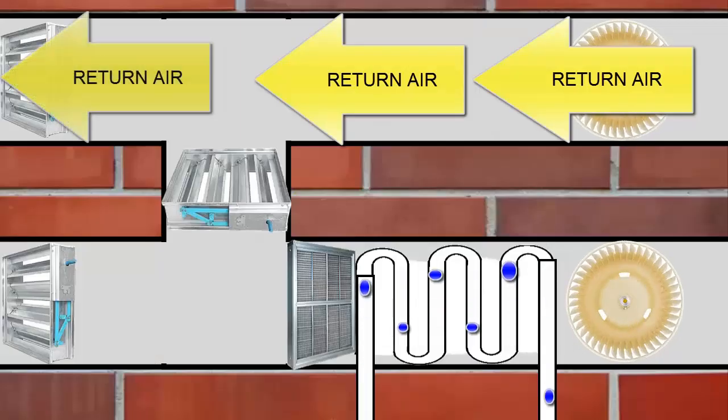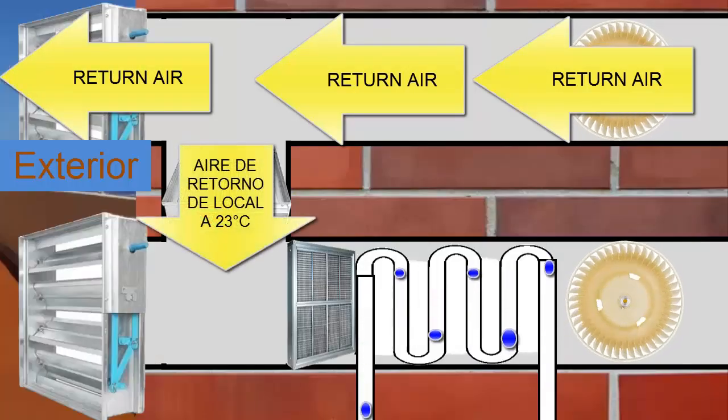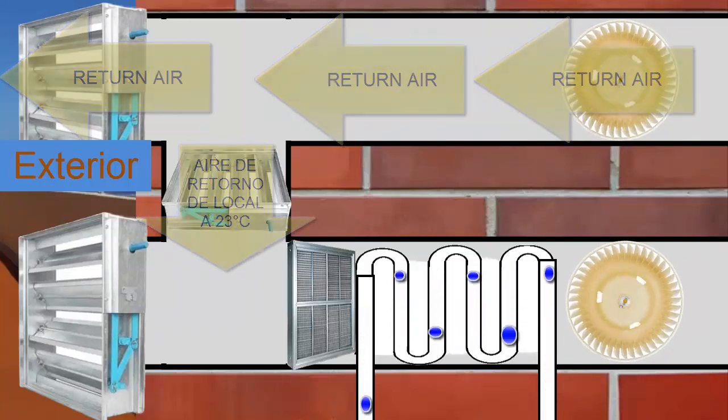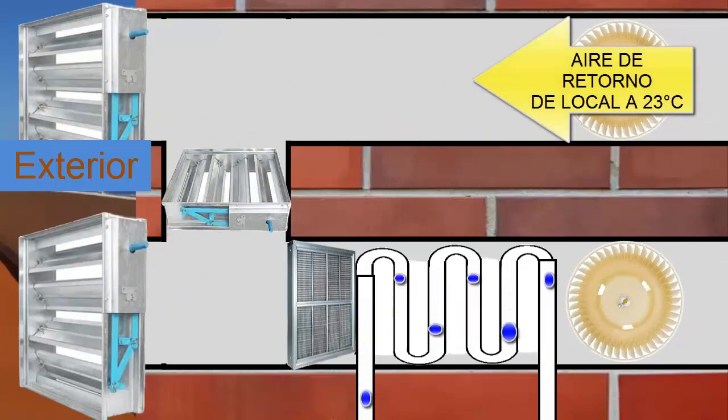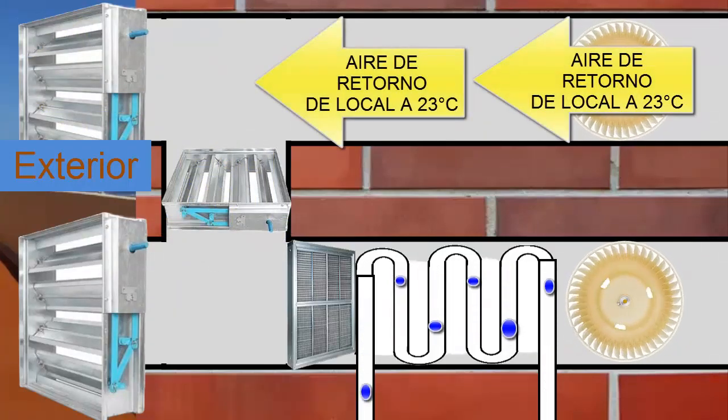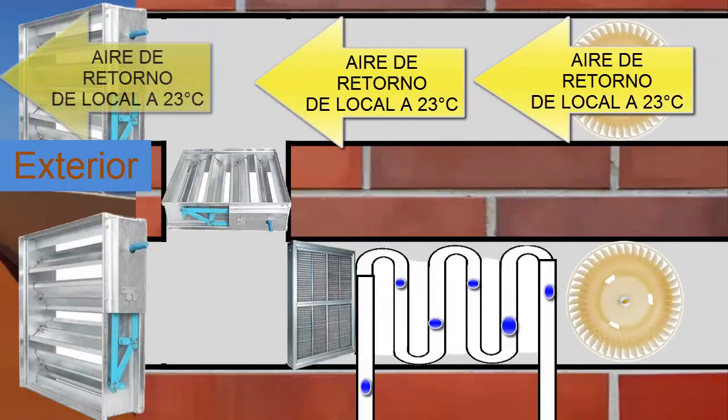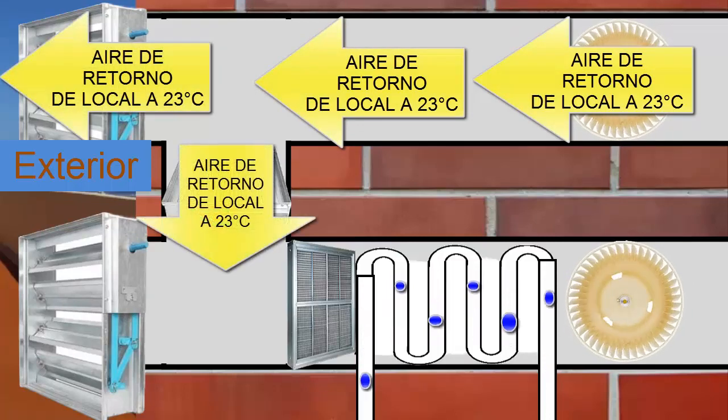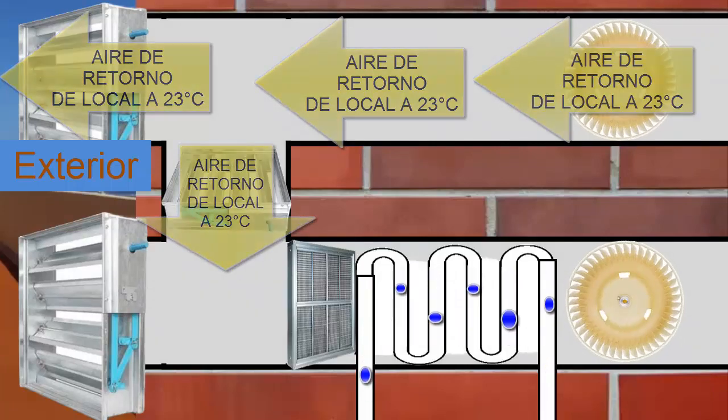Moreover, most units will have an additional duct, to take this used and dirty air out of the facilities and return it to the air handling unit, where a fan returns it to the atmosphere. Part of this return air can be recycled back into the fresh air supply, to save energy.